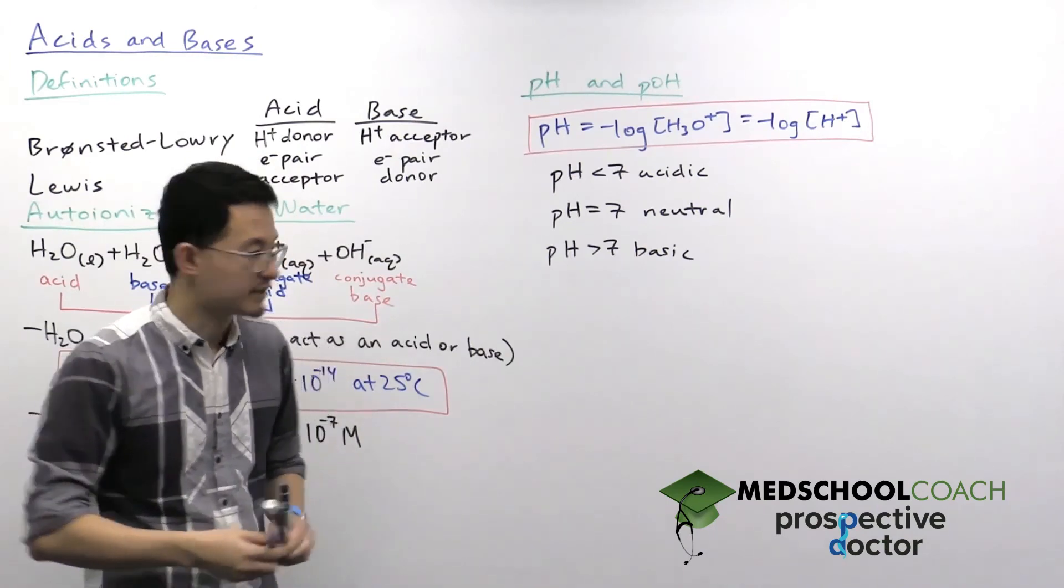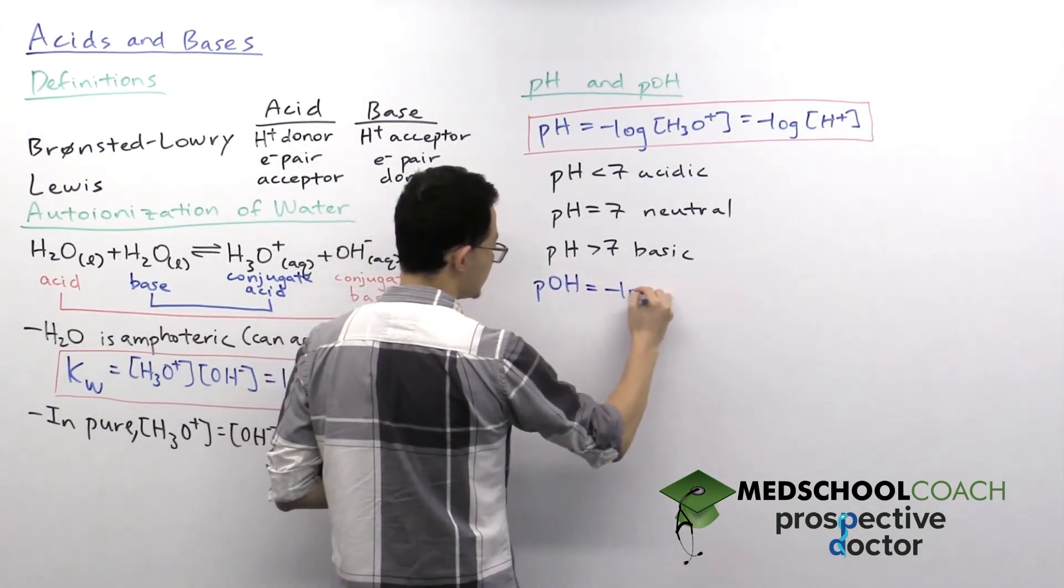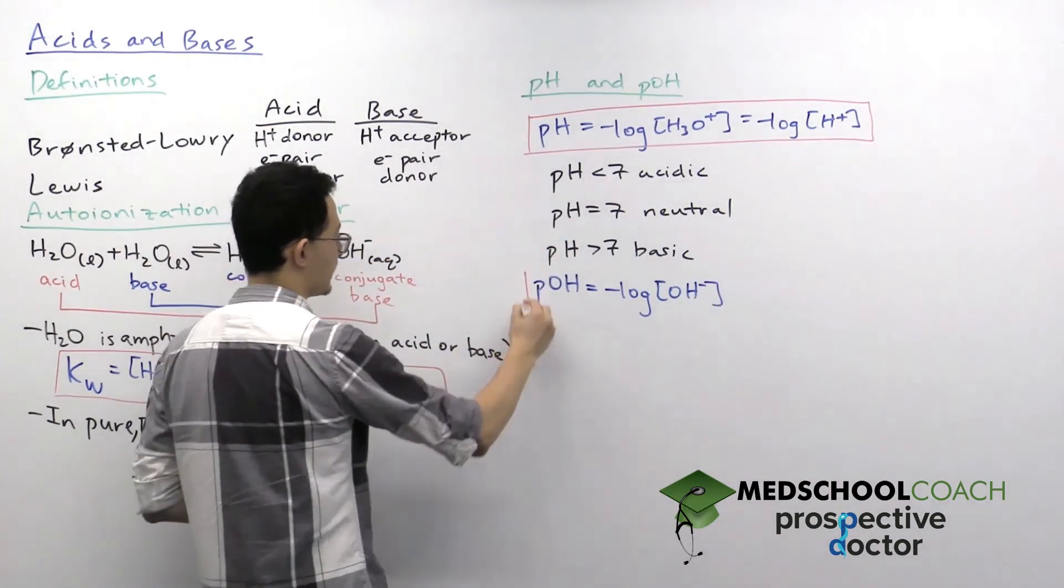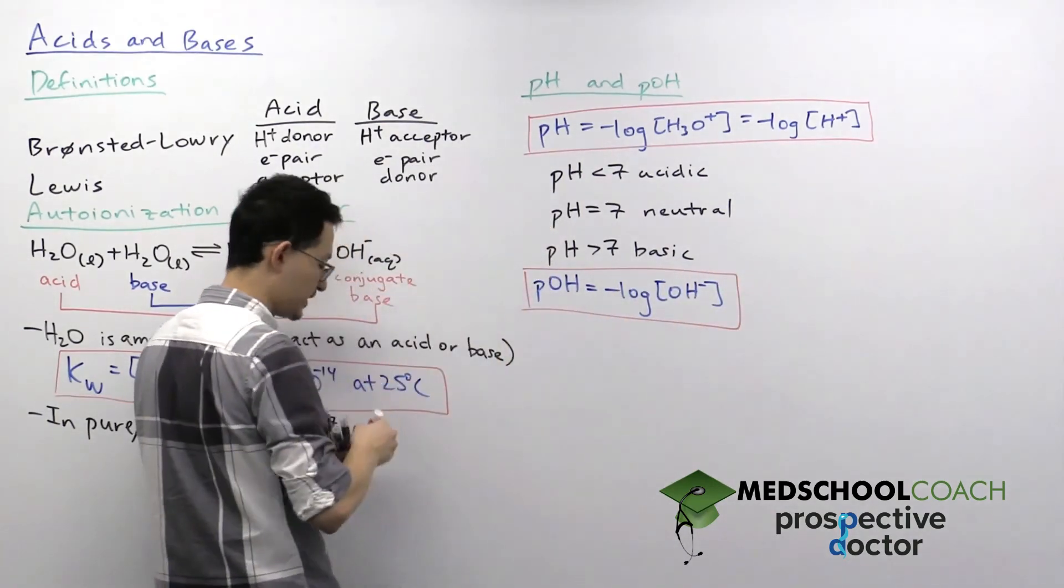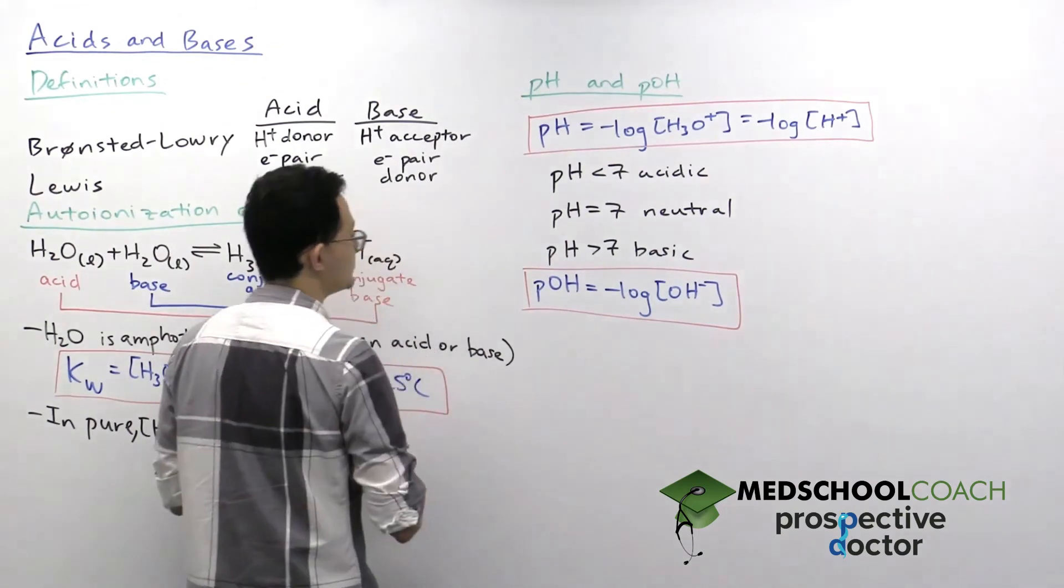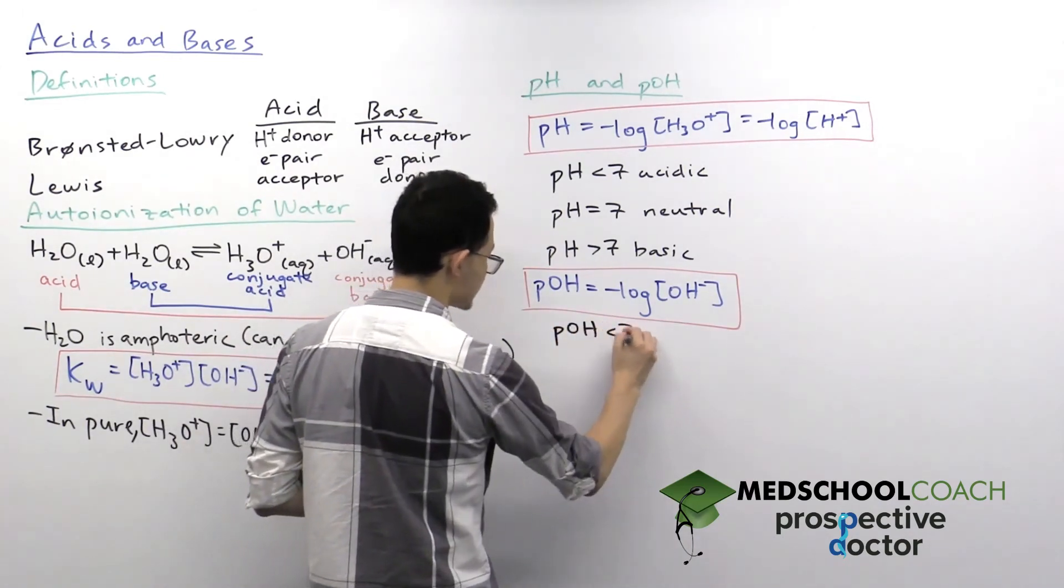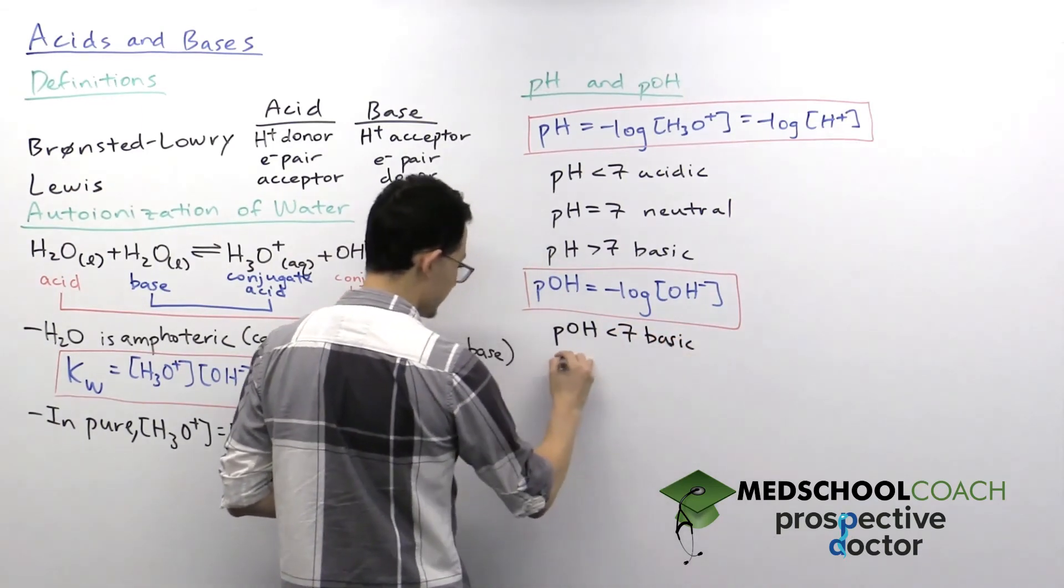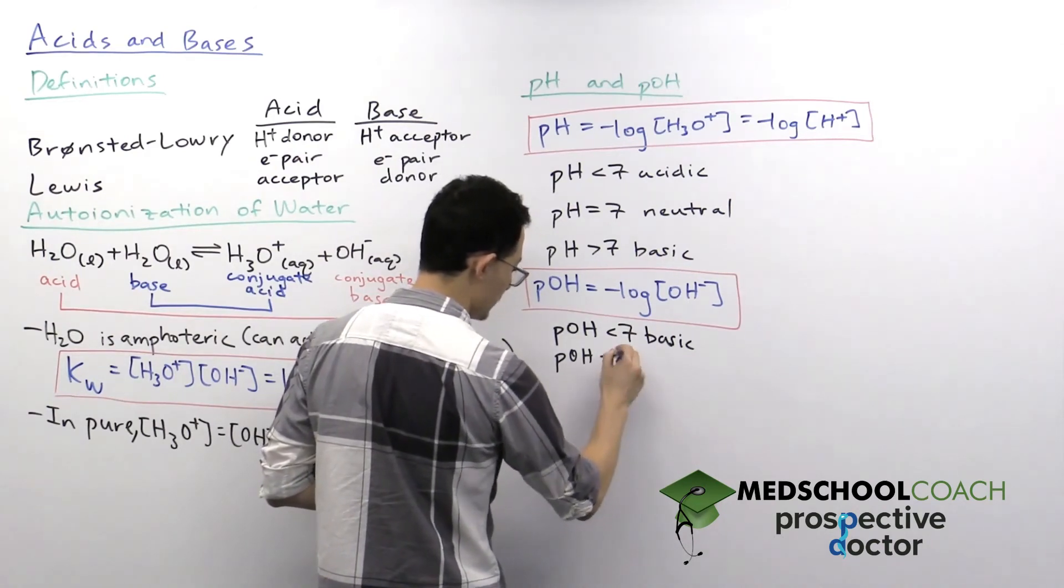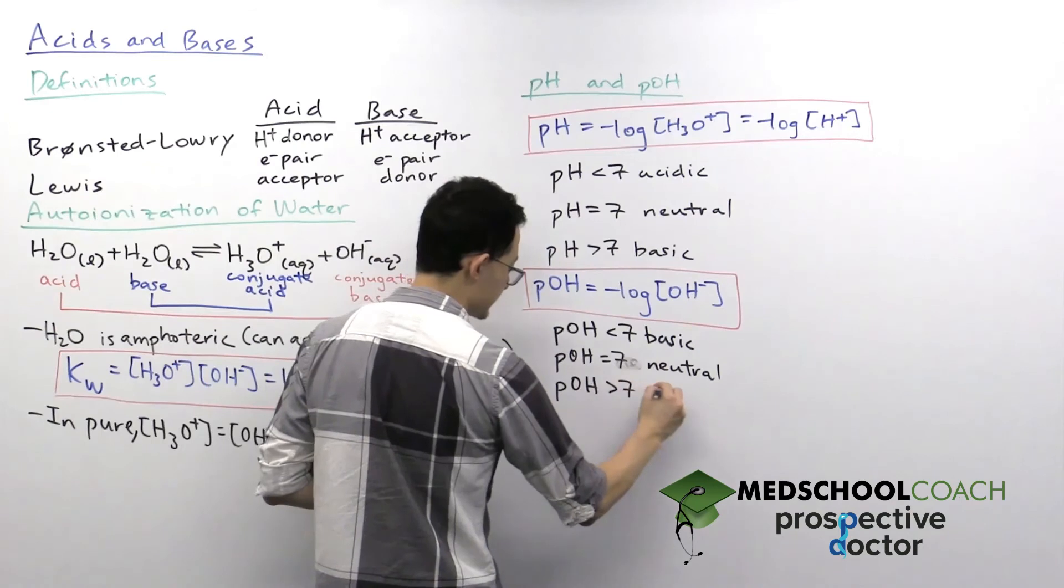We can write a similar expression for the pOH. pOH is very similar. Instead of the negative log of the hydronium ion concentration, it's the negative log of the hydroxide ion concentration. Again, you do want to know how to calculate this. So we've got the equation right here. And just as with the pH, the pOH generally has values between 0 to 14. And it in many ways is the opposite as pH. So if the pOH is less than 7, you have a basic solution. If it's equal to 7, it's neutral. And if the pOH is greater than 7, it is acidic.